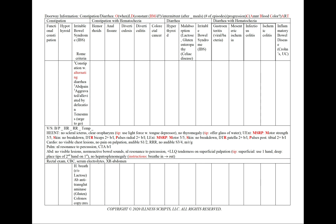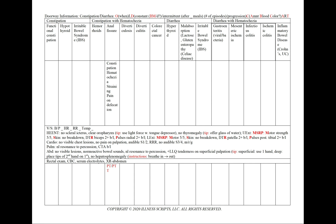In hemorrhoids, we'll see constipation with possible hematochezia, blood on the toilet paper, and an anal mass. We'll order a PT and PTT, as we do for any case involving blood. In an anal fissure, we'll see constipation, hematochezia, straining, pain, and pain on defecation. We'll also include a PT and PTT.